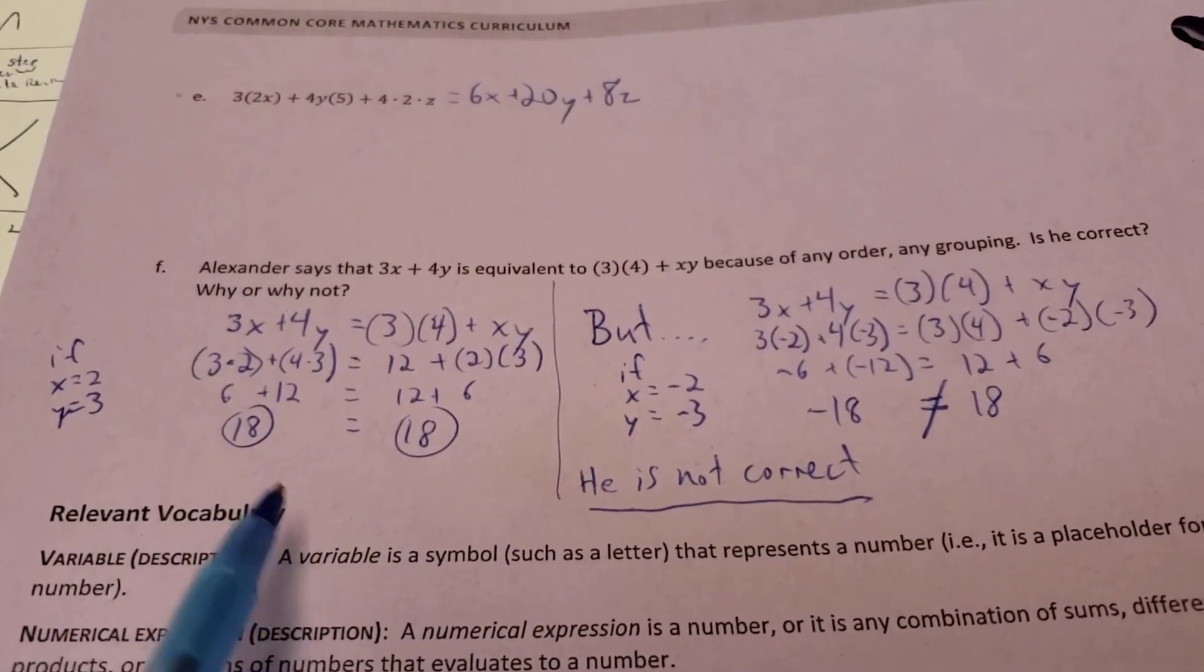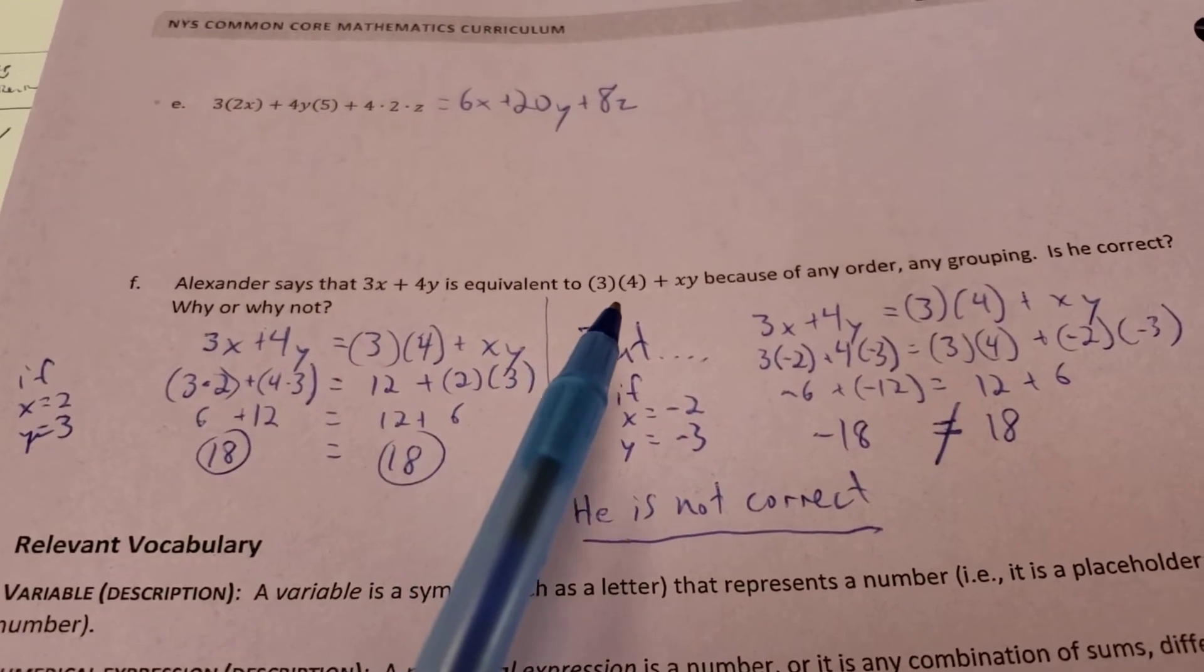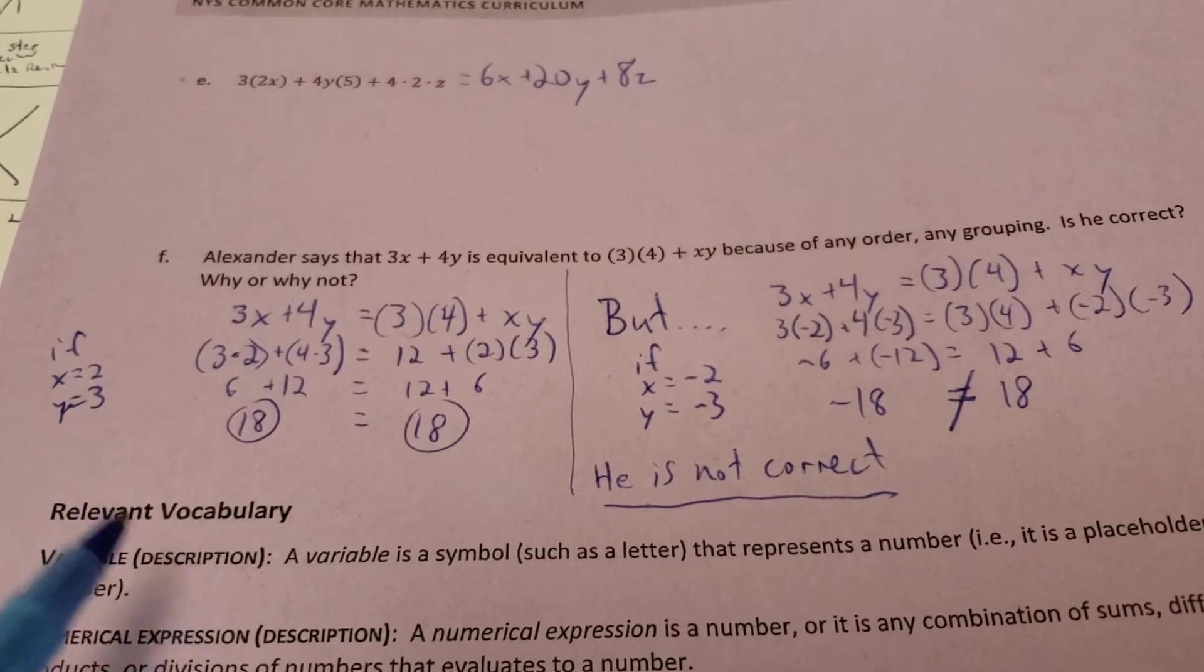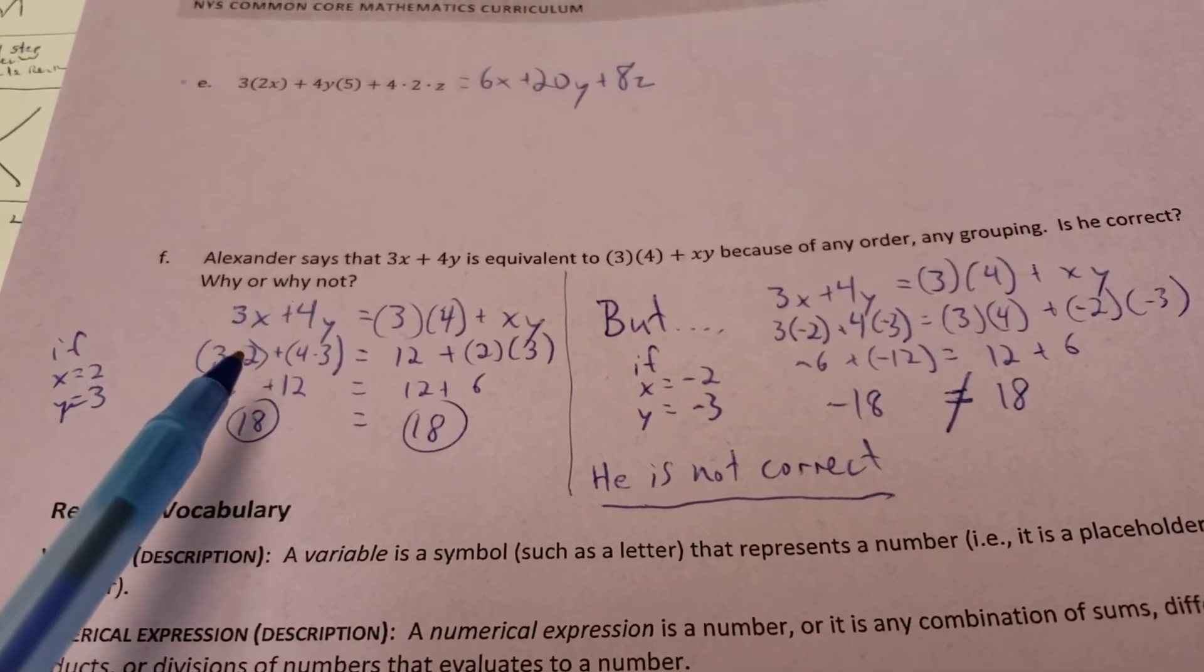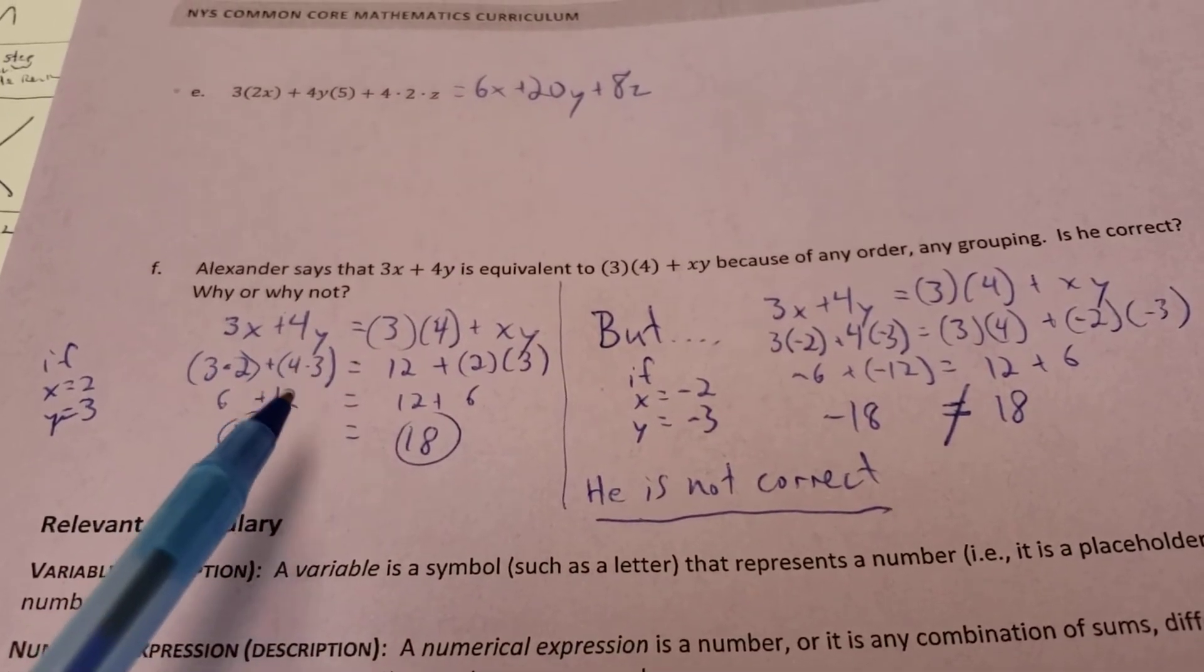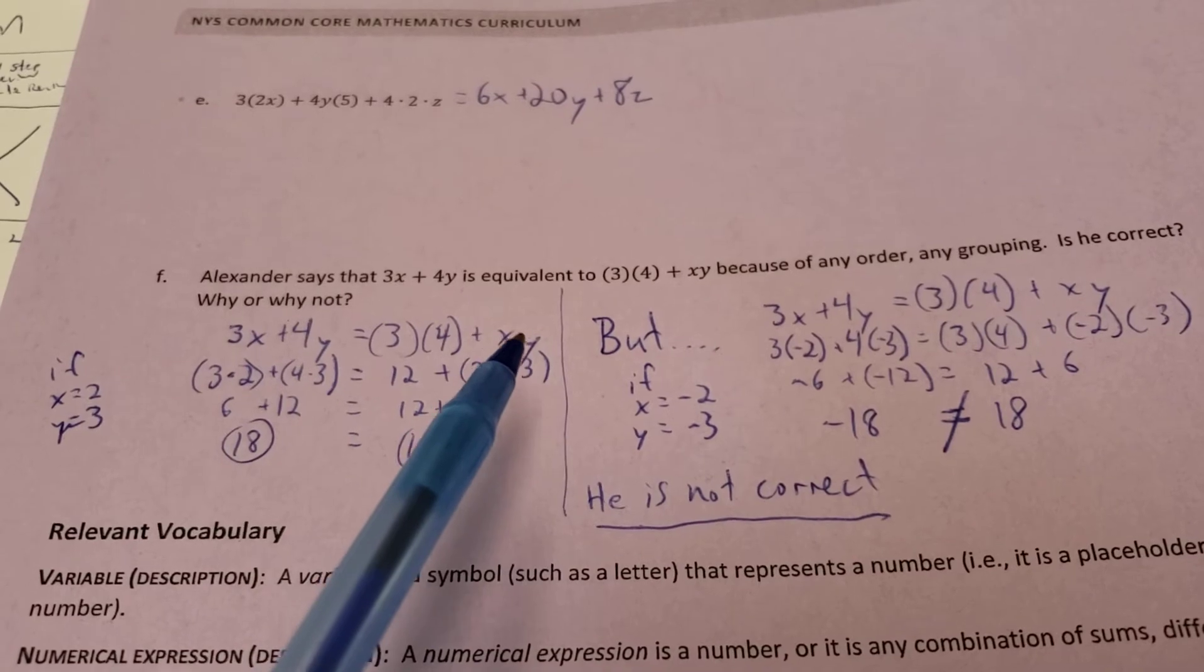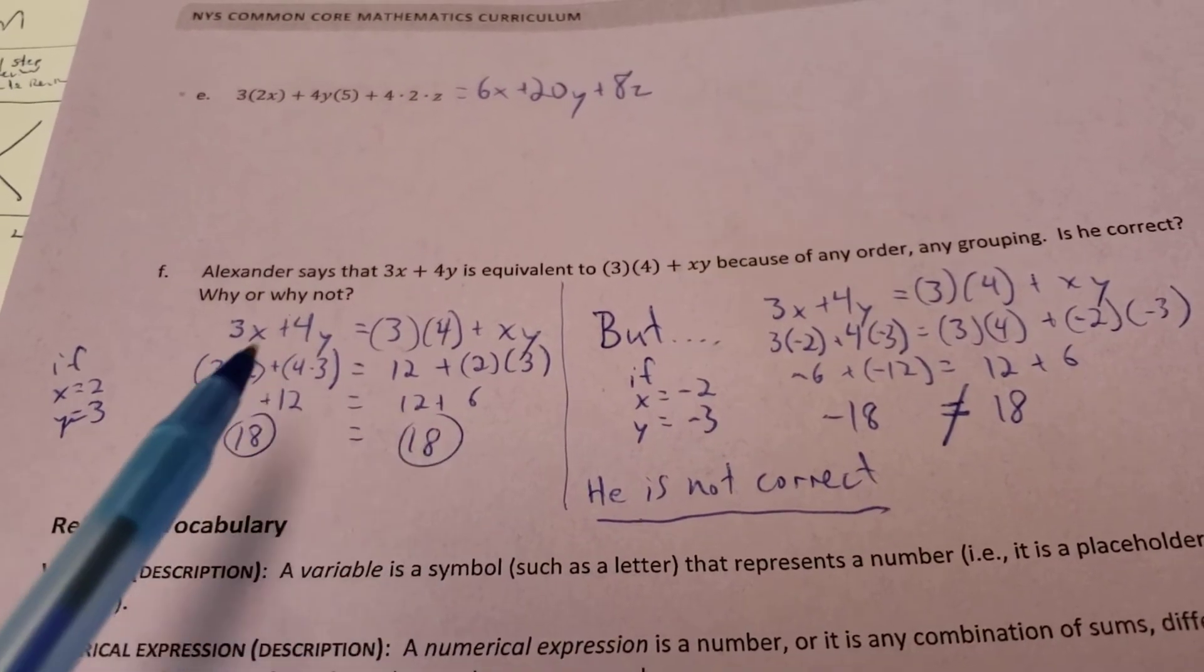Alright, here's an example here. It says, Alexander says that 3x plus 4y is equivalent to 3 times 4 plus x times y because of any order, any grouping. Is he correct? Well, if x is 2 and y is 3, then 3 times 2 gives you 6, and 4 times y, 4 times 3 gives you 12. He's going to get 18 from there. And if he said, well, 3 times 4 is 12, and then the other, x times y, which is 2 times 3 gives you 6, it works. So he's right so far.